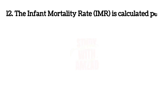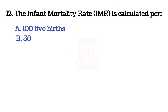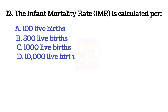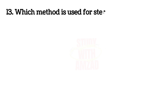Next question: the infant mortality rate is calculated per? The correct answer is C, 1000 live births.